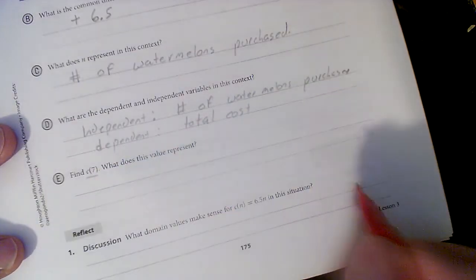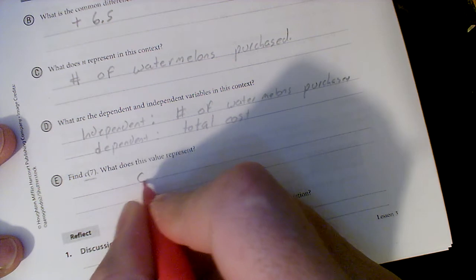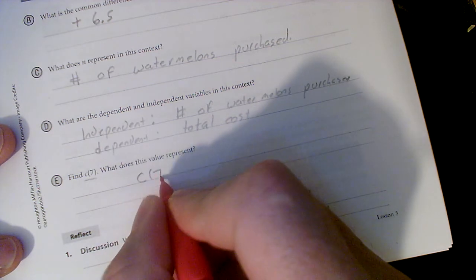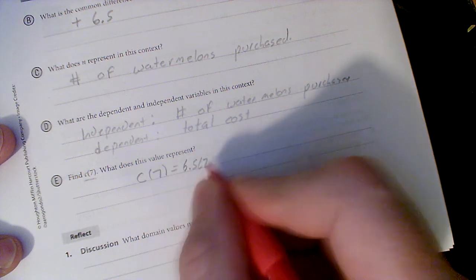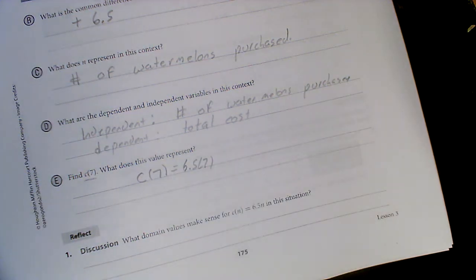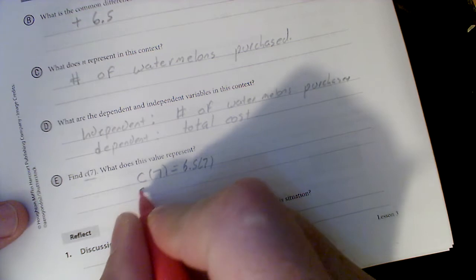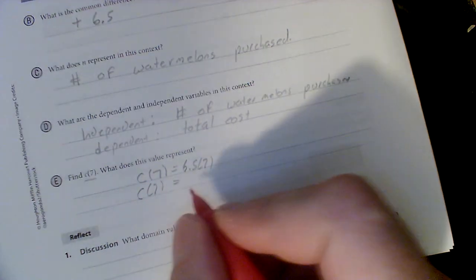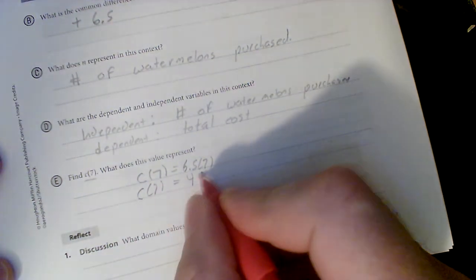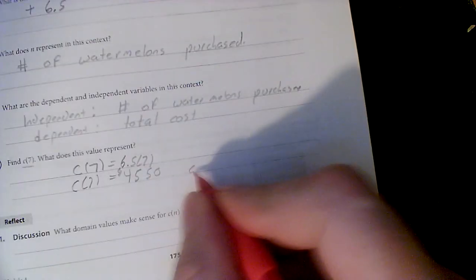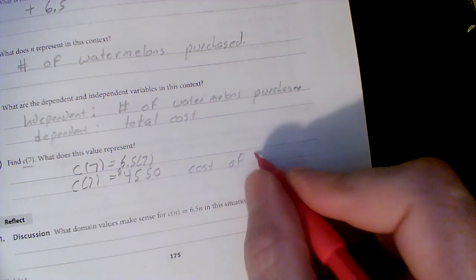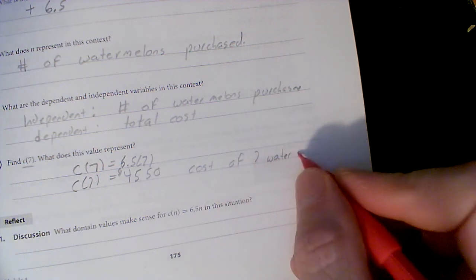Find C of seven. So what we do is we say C, we're just plugging it in. This is an explicit, so we just plug right in. Six point five times seven. I'm gonna come over here and do it. Got a little calculator, so I'm gonna go six point five times seven, and C of seven is equal to, looks like, forty-five dollars and fifty cents. And that is the cost of seven watermelons.